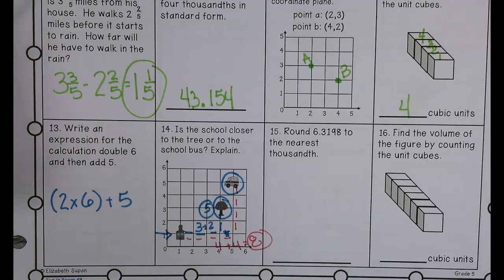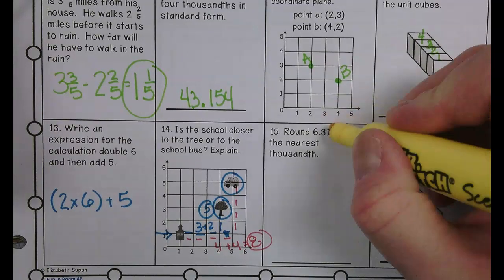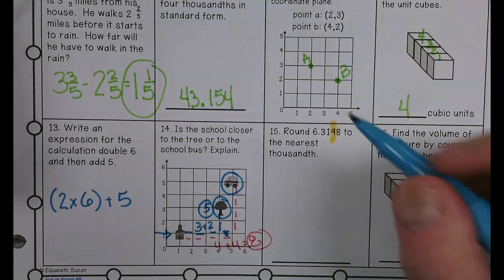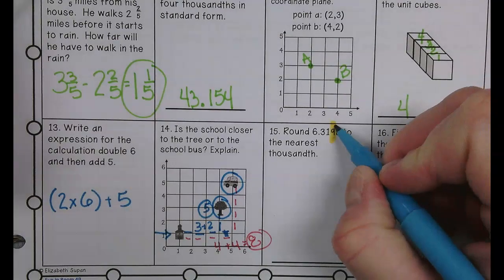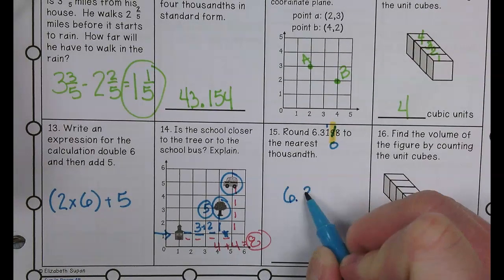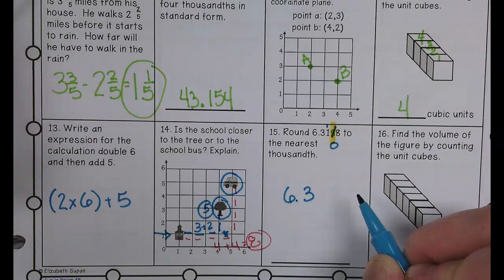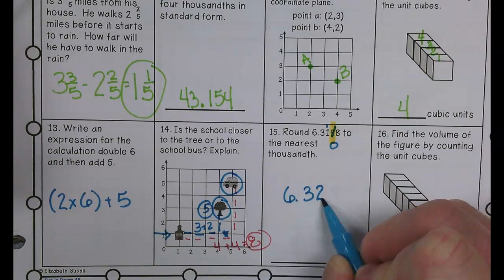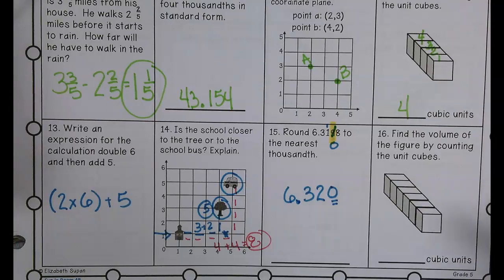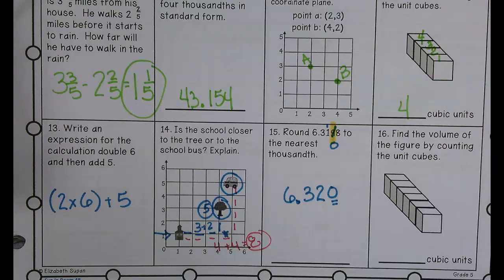Let's start out with what number is in the thousandth place. So the 9 is in the thousandth place. The 8 is going to bump the 9 up. So the 9 is going to become a 10, so I'm going to carry my 1. So it's going to be 6.320. You kind of want that 0 there in this particular sense because it's rounding to the nearest thousandth, so you really need to have that 0 there.